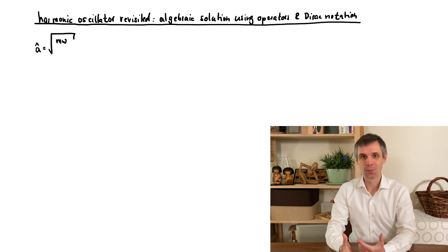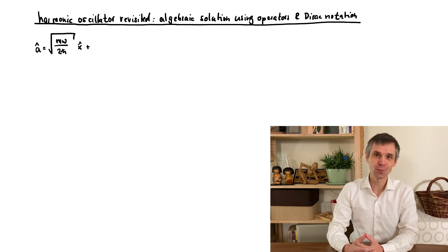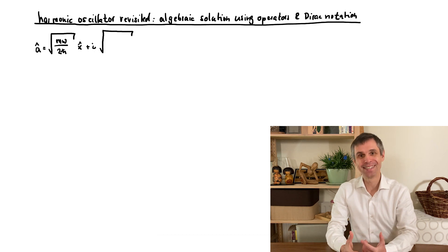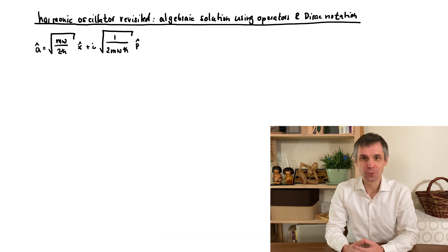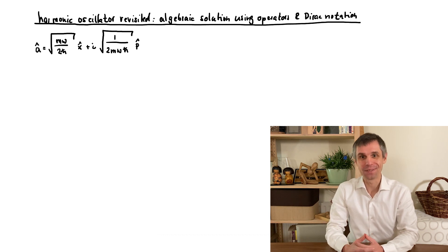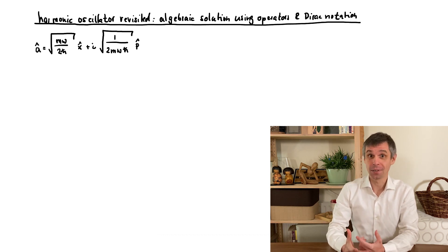Our inventive starting point is to combine the operators for position and momentum into a single object, given here as A. Very weird, you may think. If you replace the operators in there by real numbers, this gives you a complex number. Indeed, these objects are not observables.